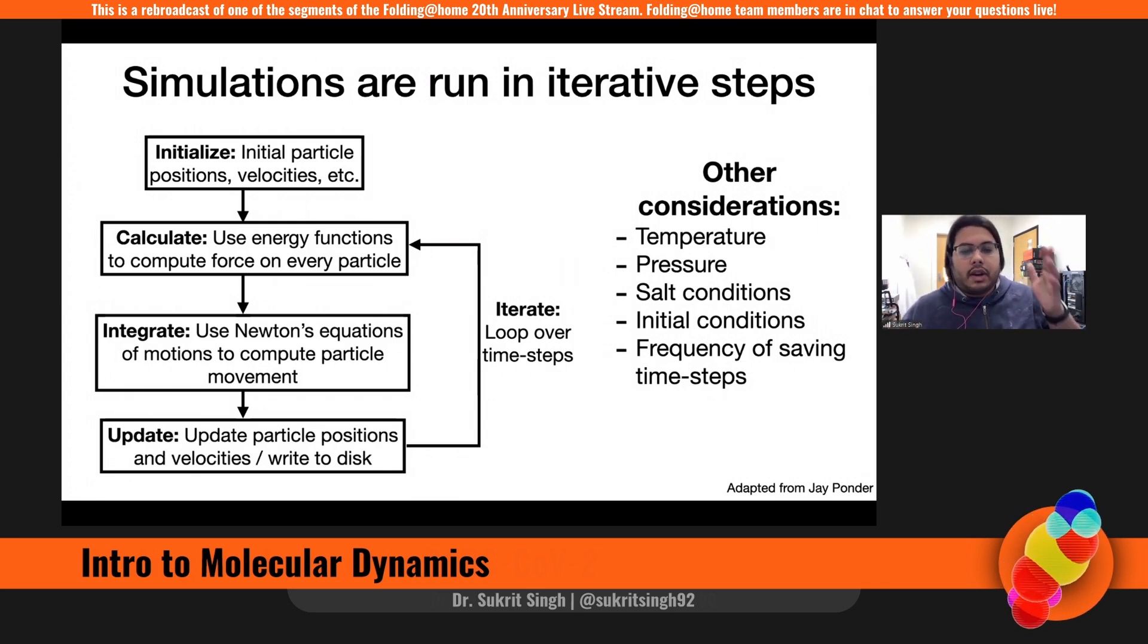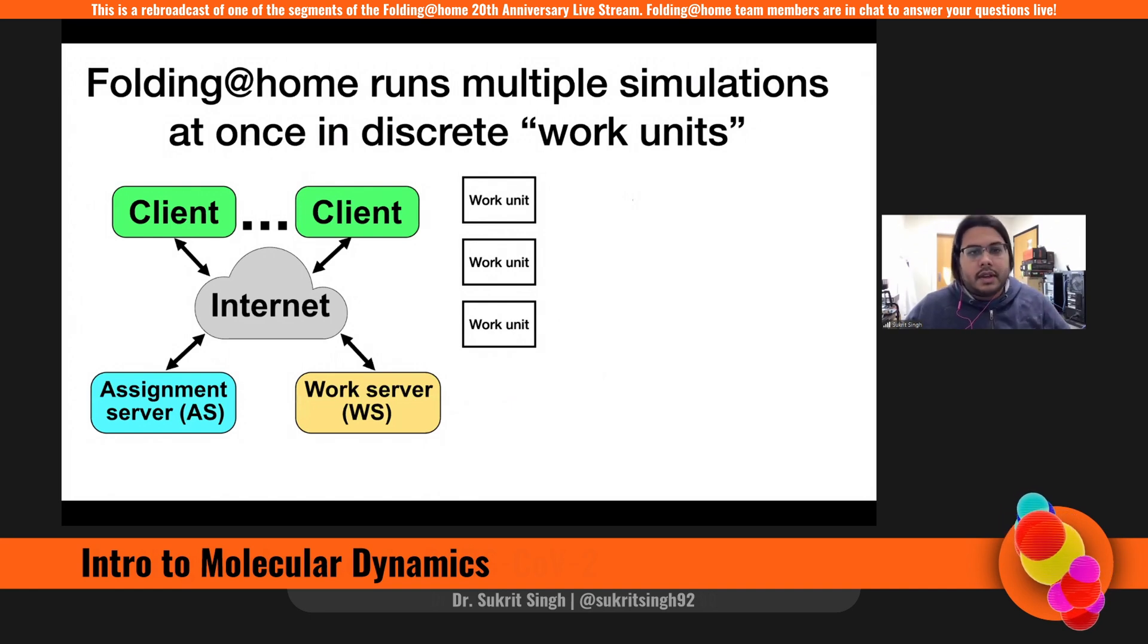And so this is where Folding at Home power comes in. Many of you are familiar with these assignment servers and the work servers where all of our files are stored. And you folks out there in the world are running the client software. And we start off with a series of work units. And these work units are optimized and tested beforehand. So any of you beta testers out there, you help us generate these initial work units and make sure our points are optimized.